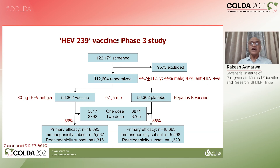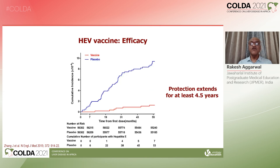In a large trial in China, nearly 112,000 persons were randomized to receive either the vaccine or a placebo, which was a hepatitis B vaccine. It was a very good study: 86% of persons completed the study. Looking at results for four and a half years after completion of the vaccine series, we can see the blue curve showing the unvaccinated group and the red curve showing the vaccinated group, with a protection of 95% lasting for at least four and a half years.